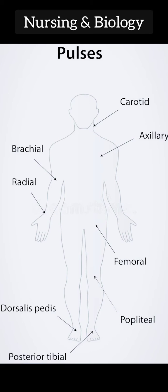There are various pulse points in our human body: carotid, axillary, brachial, radial, femoral, popliteal, dorsalis pedis, posterior tibial.